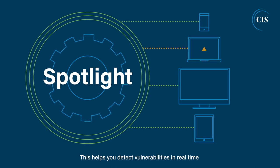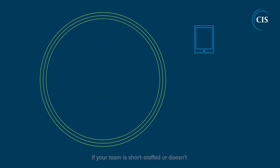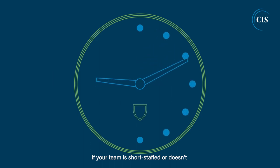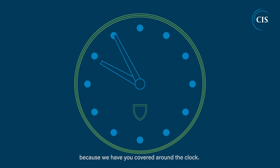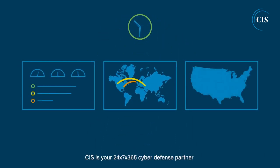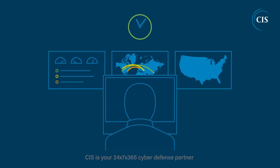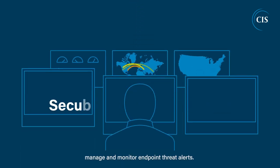This helps you detect vulnerabilities in real-time so that you can address them more quickly. If your team is short-staffed or doesn't have coverage on off-hours, you don't have to worry, because we have you covered around the clock. CIS is your 24/7, 365 cyber defense partner with a security operations center that will manage and monitor endpoint threat alerts.